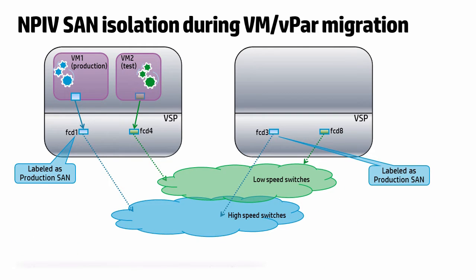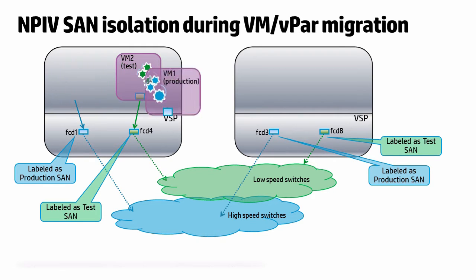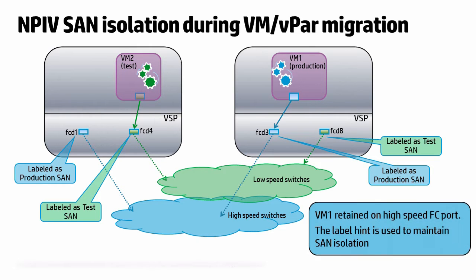It allows you to label the NPIV resources on the source and target VSP into categories based on the speed of FC ports or the load on the switch to which the ports are connected. Once this is done, the HPVM migrate command will use the label information as a hint while picking FC ports on the target VSP for placement of NPIV HPAs of the migrating vPAR or VM.